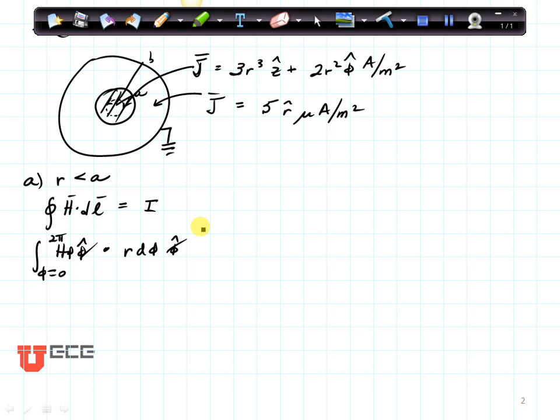These two are going to dot away to 1, and you're going to end up with r, 2πr, H_phi.